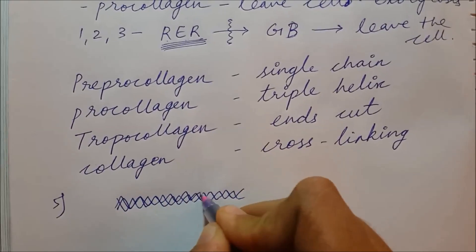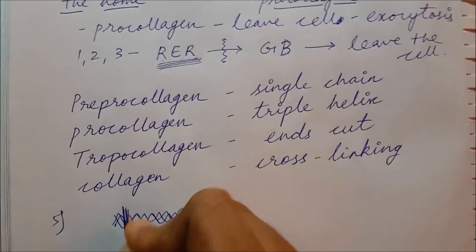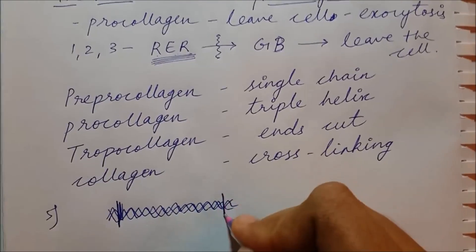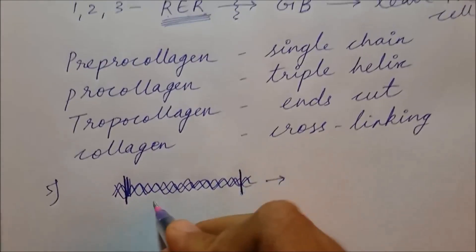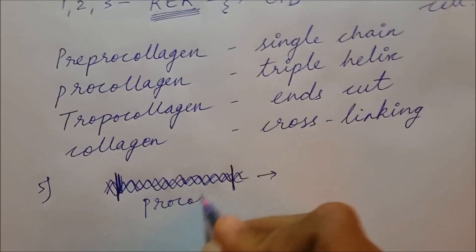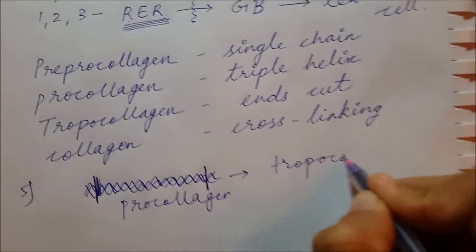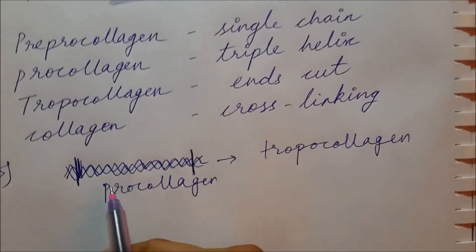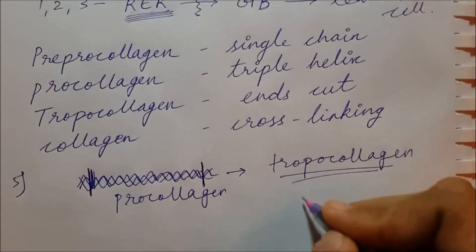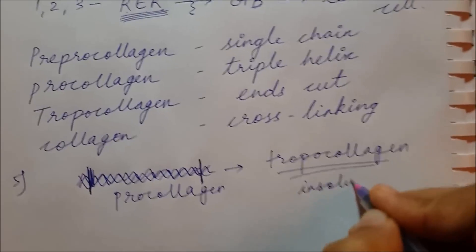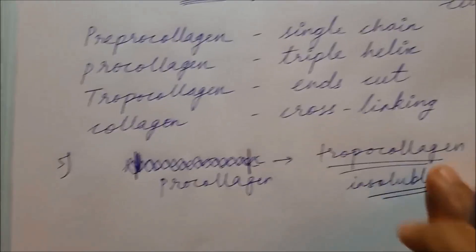When you cut the end parts of the triple helix, that is called proteolytic processing or proteolytic cleavage. After cutting, procollagen is converted into tropocollagen. The key difference between procollagen and tropocollagen is that the ends are cut off, and tropocollagen is insoluble in water — that is the main distinction.